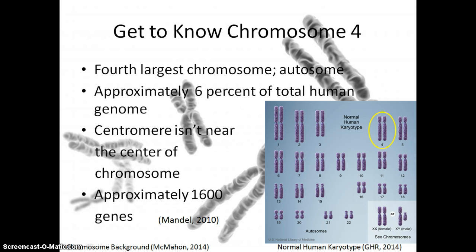First, let's get to know chromosome 4. Chromosome 4 happens to be the fourth largest chromosome in terms of actual size, and it is an autosome, which means it is not a sex chromosome. Approximately 6% of the total human genome is contained in chromosome 4. The centromere isn't actually in the center of the chromosome — as you can see in the karyotype to the right, it is more towards the top of the chromosome. In chromosome 4, there are approximately 1,600 genes found.